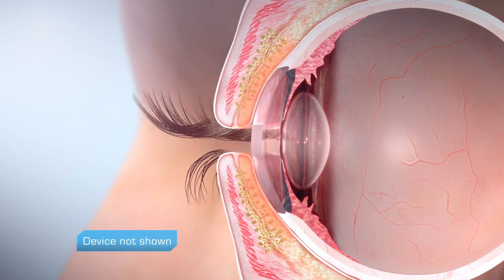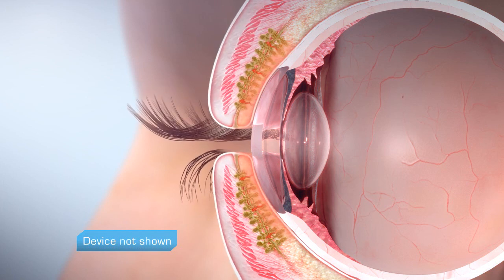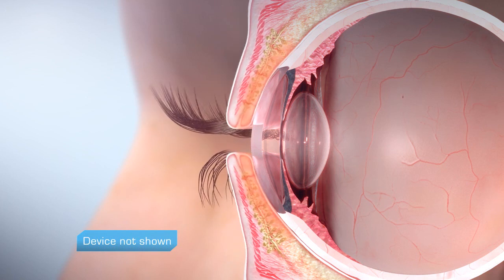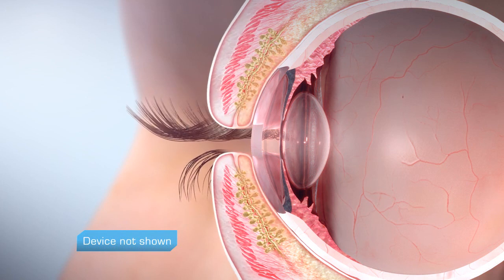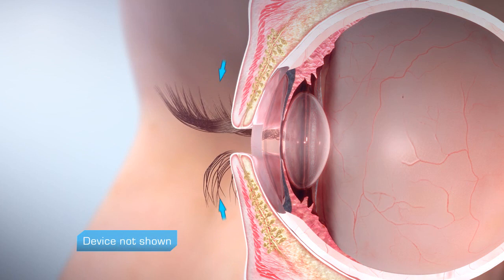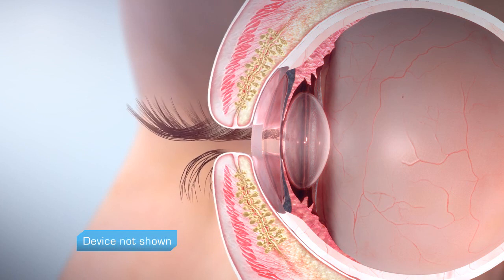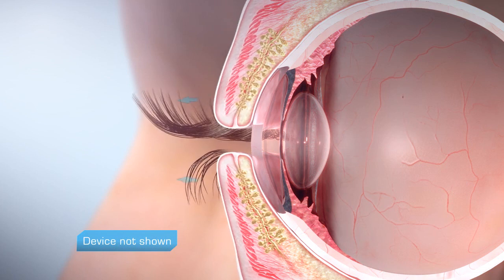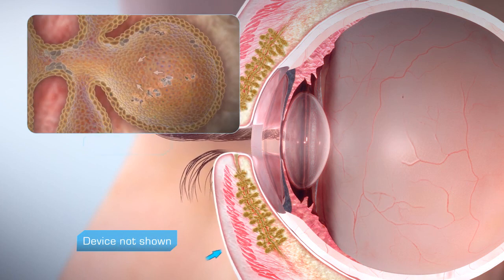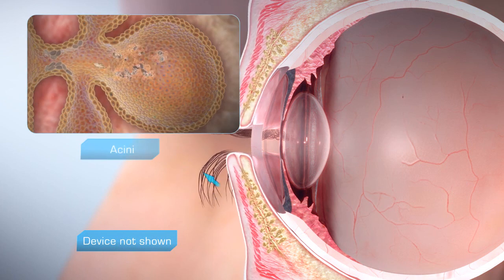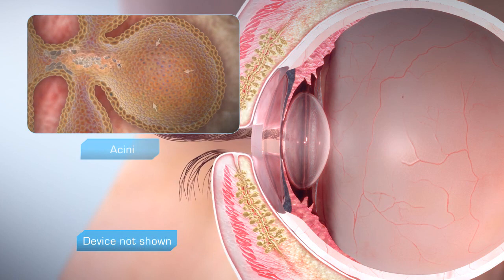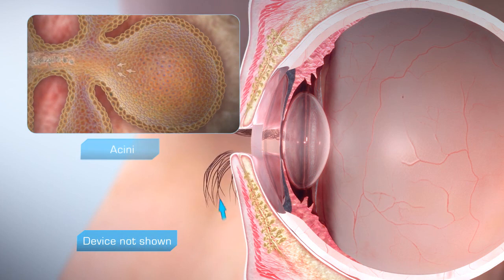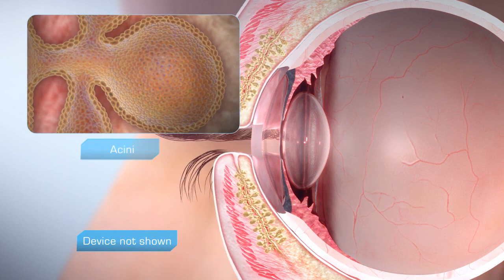Gentle pressure is applied from outside the lid from the base of the gland to the gland opening, removing blockage and flushing dead cells from the gland. During this process, stagnant gland tissue may be removed from the glands.